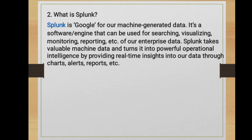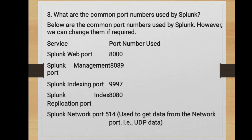What are the common port numbers used by Splunk? There are several ports Splunk uses for its operation. The key ones are: Splunk Web port — 8000; Splunk management port — 8089; Splunk indexing port — 9997; Splunk index replication port — 8080; and Splunk network port — 514.